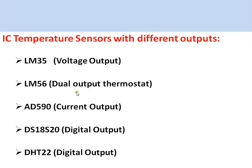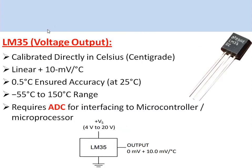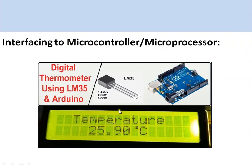The LM35 is a three-terminal sensor that directly gives voltage output. This voltage increases 10 millivolts per degree Celsius rise in temperature, with a range of minus 55 to 150 degrees. It requires an ADC for interfacing to a microcontroller, though microcontrollers with built-in ADCs like the Arduino board can accept the analog output directly and display it on an LCD.